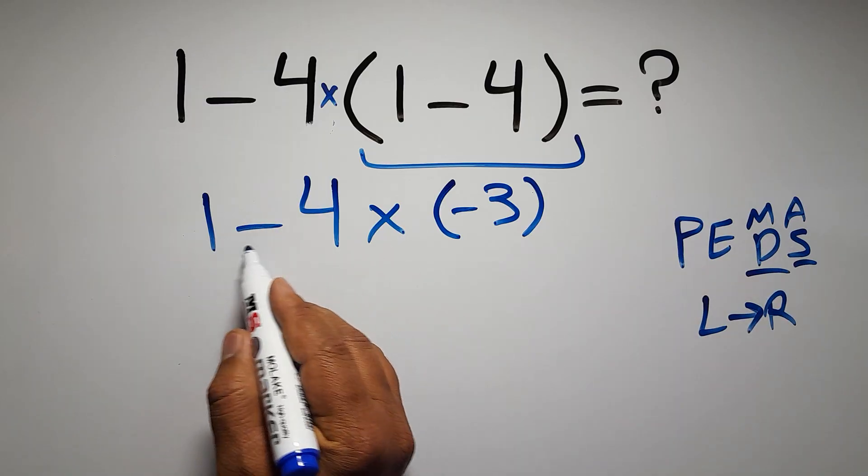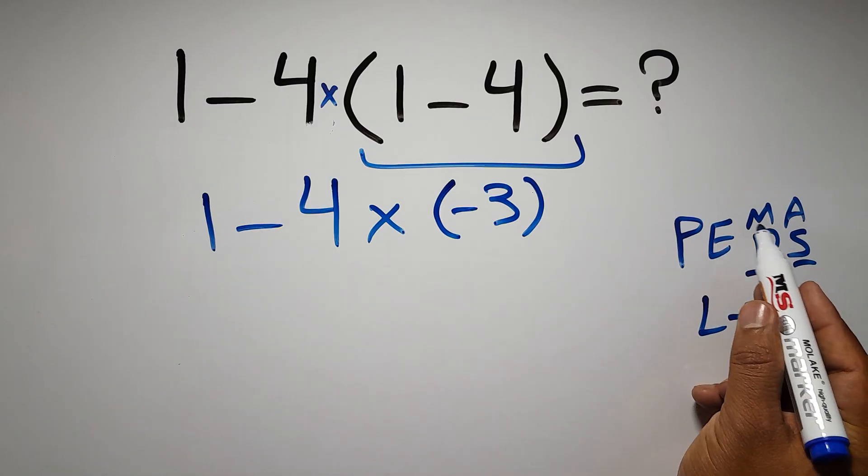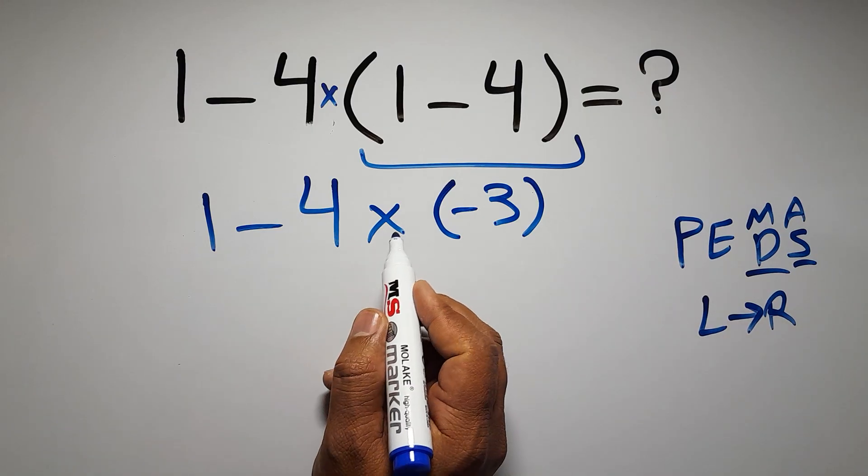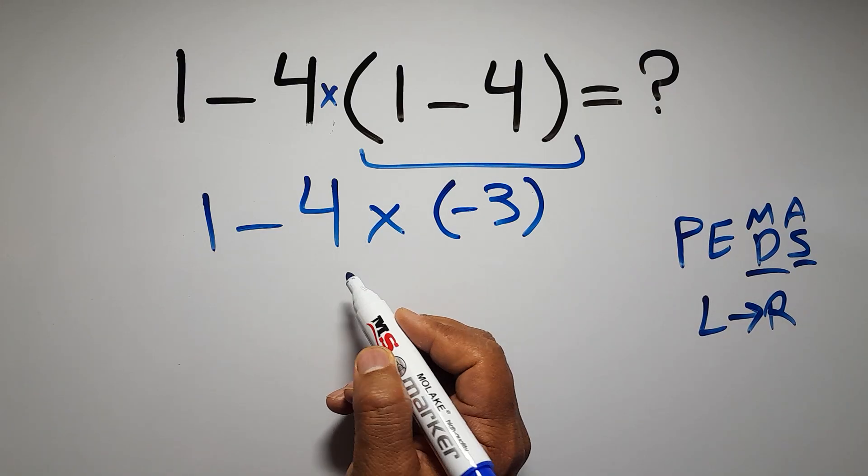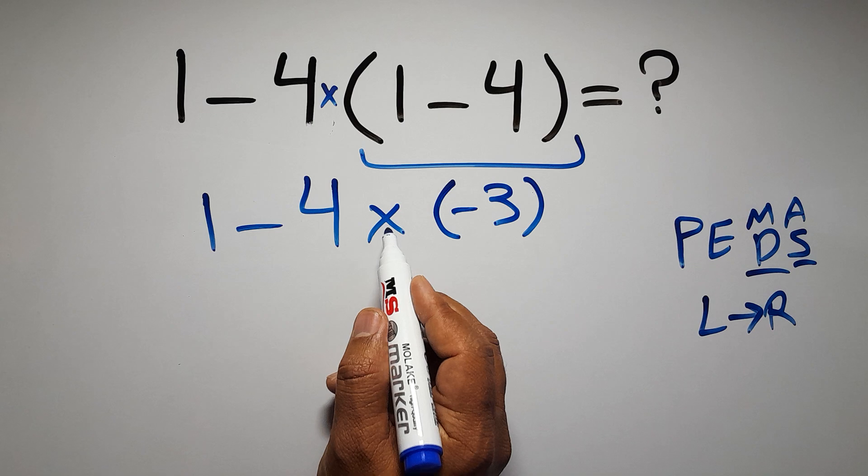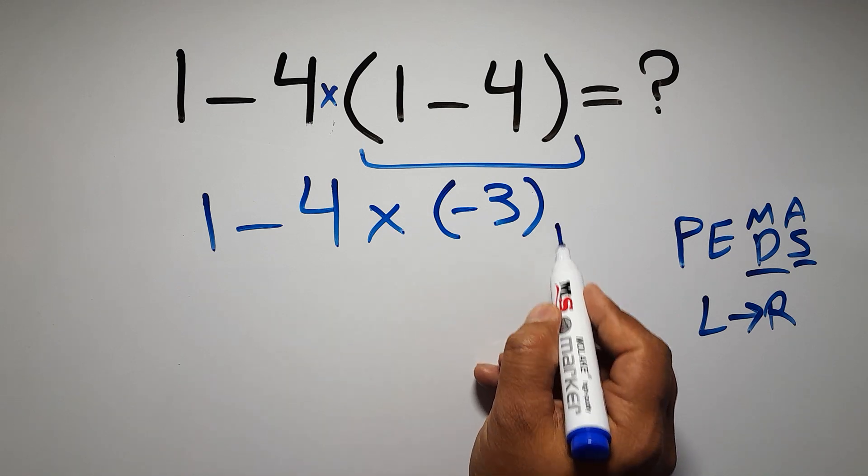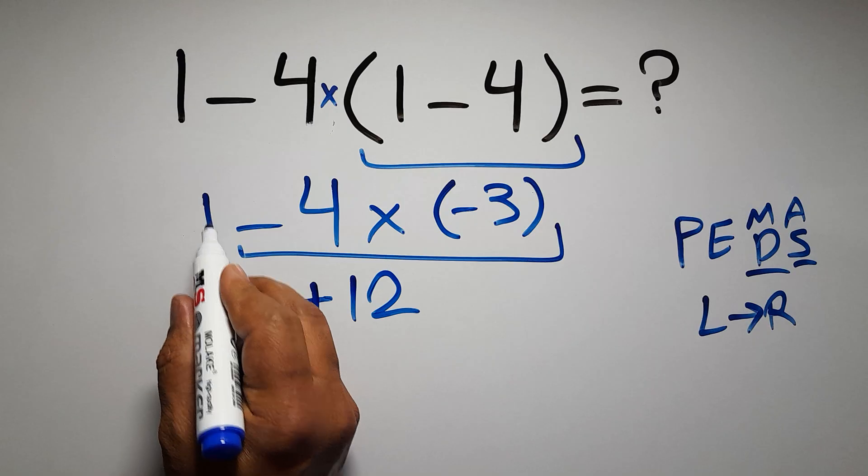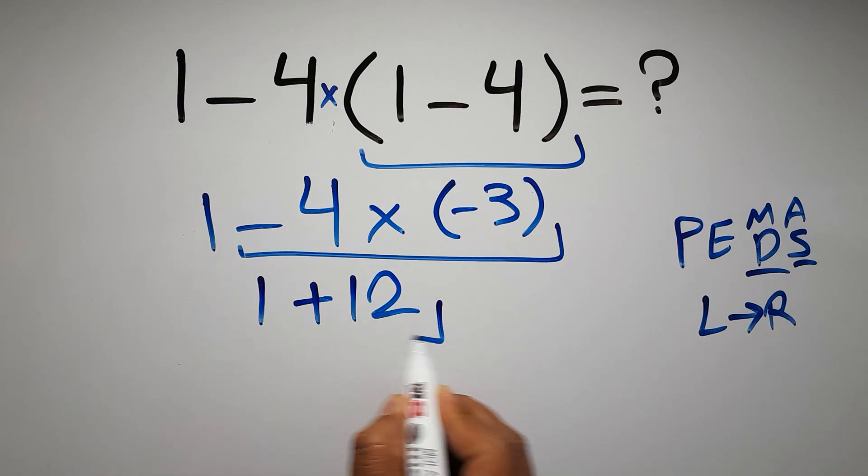So here first we have to do this multiplication. Negative 4 times negative 3 gives us positive 12. So 1 plus 12, which equals 13, and this is our final answer to this problem.